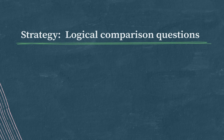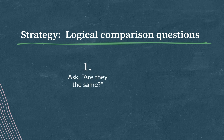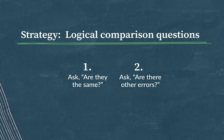Your strategy here primarily turns on figuring out what's being compared to what. First, ask yourself: are they the same? Are you comparing two terms in similar categories? Cross out choices that are illogical. Then ask yourself: are there any other errors? If you find that two choices fix the logical comparison error, look at them closely — one will introduce an additional error. Use these tips to logic your way to the answer. Good luck out there — you've got this.